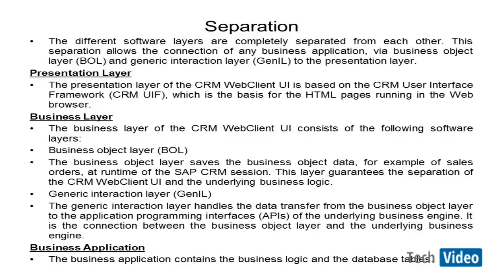Then we have the GenIL layer, which handles the interaction between your BOL layer and the APIs. This layer essentially identifies which APIs to call and calls the right APIs depending on the business object on which we are calling the methods. Then we have the business application layer, which comprises your APIs containing the business logic and the database tables containing the actual data. These both combined form the business application layer. Now we will specifically talk about GenIL.